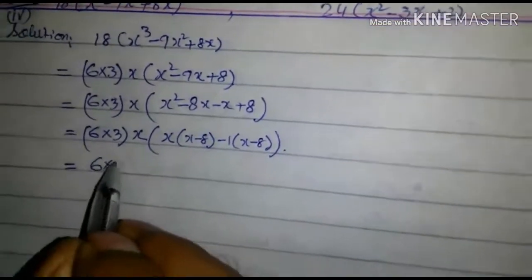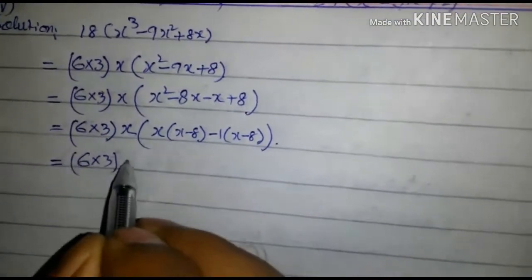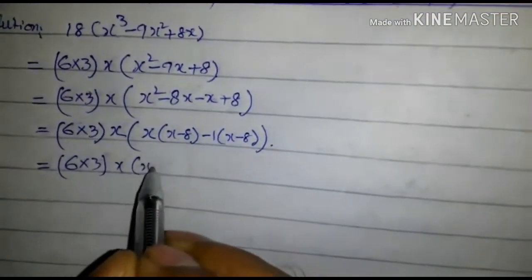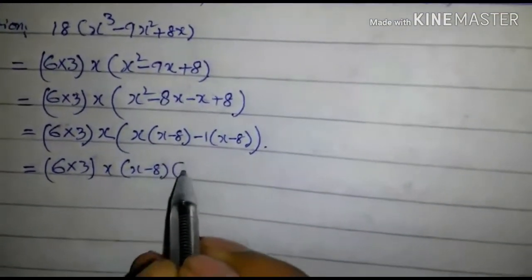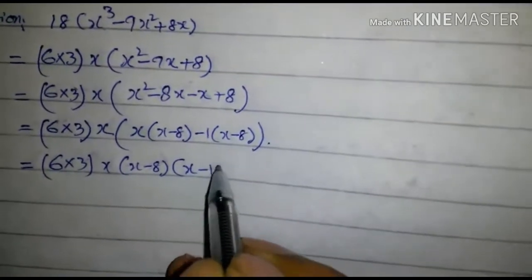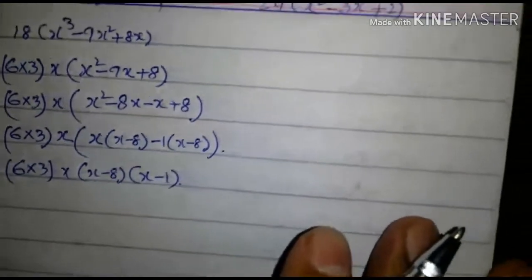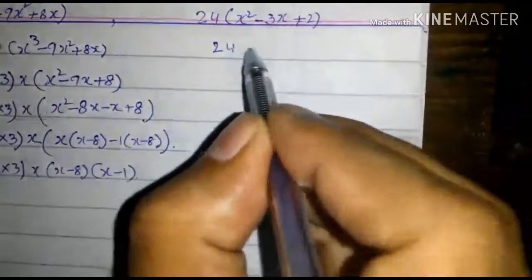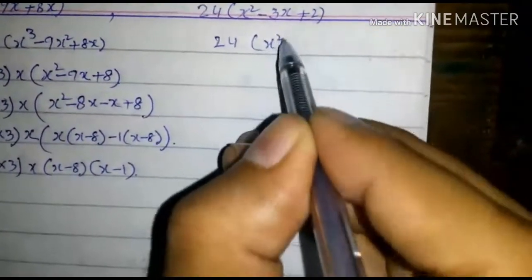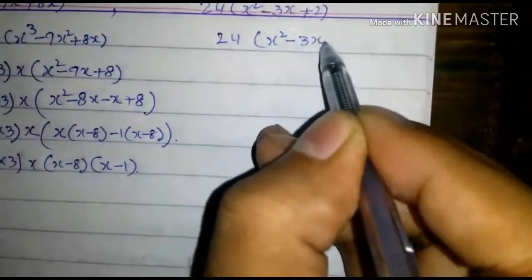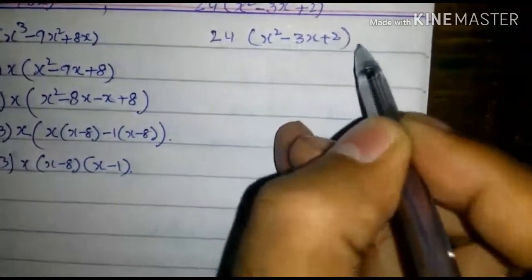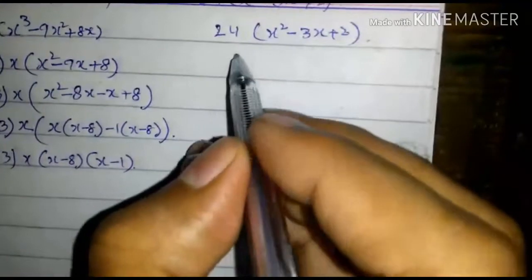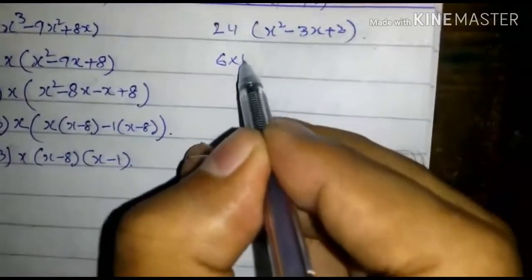So we get 6 into 3 into x into (x - 8) into (x - 1). Now consider the second expression: 24(x² - 3x + 2). We write it as 6 into 4.